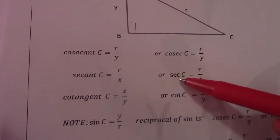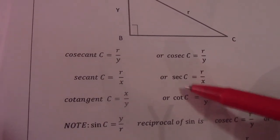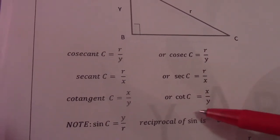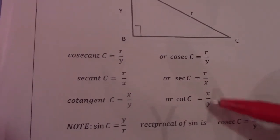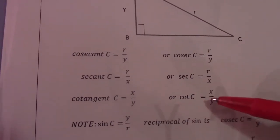Cos c was x over r. As you can see, sec c flips around and becomes r over x. Tan c was y over x, and cot c then becomes x over y.